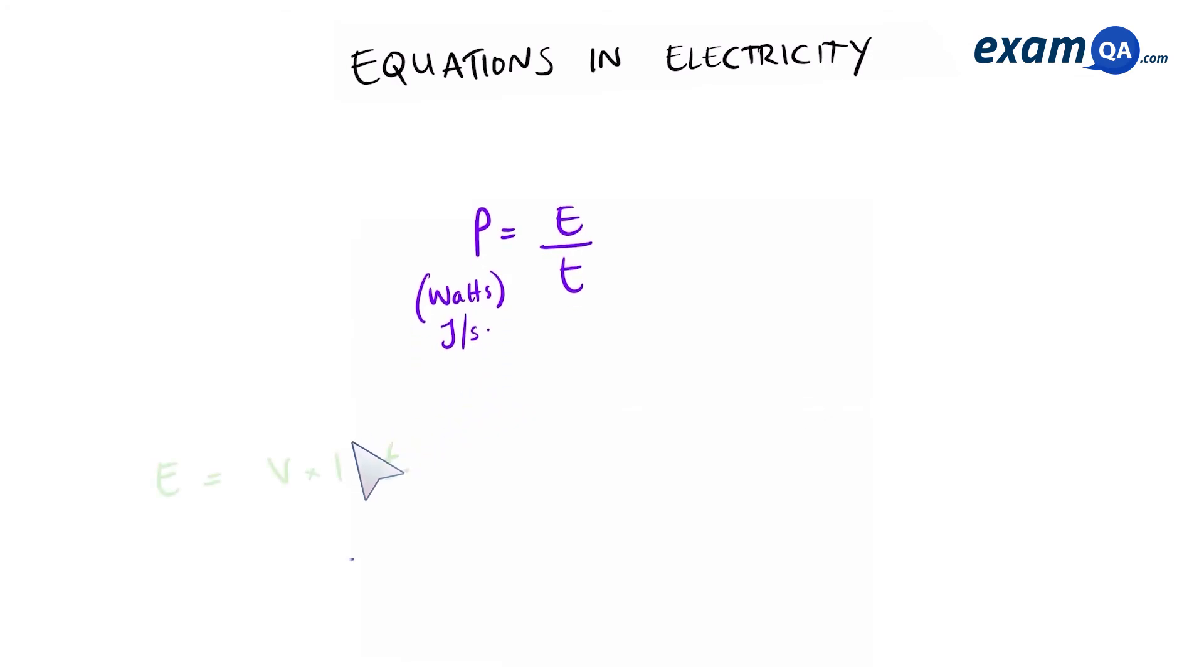Since we know that energy is equal to voltage times current times time, we can substitute that into this equation and say that power is equal to voltage times current times time over time. And then we can cancel out the Ts, leaving us with power is equal to voltage times current. There's your next equation.